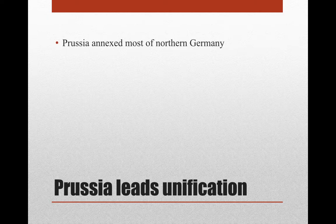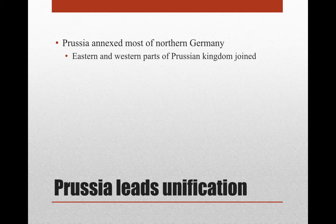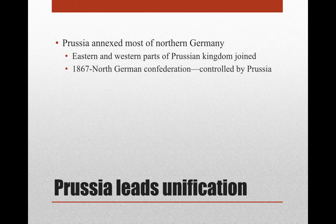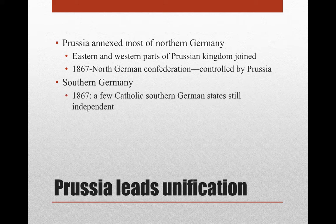By getting control of both Holstein and Schleswig, Prussia really annexed most of northern Germany. Prussia had territory in the east near Russia and a little territory on the western side as well, and those two parts of the kingdom joined. This leads to the North German Confederation in 1867, controlled by Prussia. In southern Germany, things were a little different. By 1867, a few Catholic German states were still independent, and Prussia was a Protestant country. The few Catholic states still weren't fully trusting of Prussia.